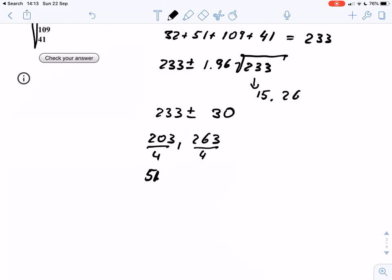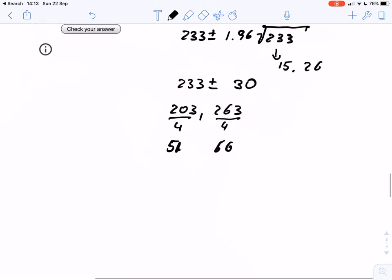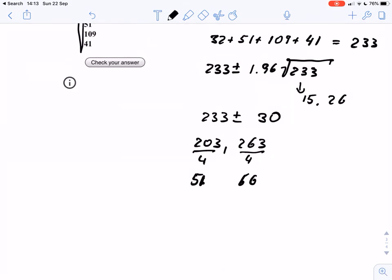And 263 divided by 4, that gives us 66 colonies. So we would expect that the true mean for the average of all plates that we can come up is somewhere between 51 and 66 colonies.